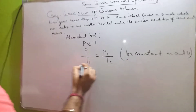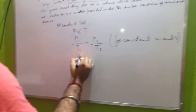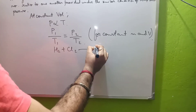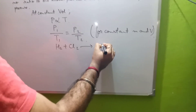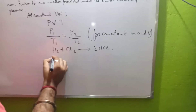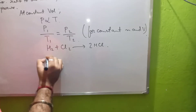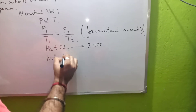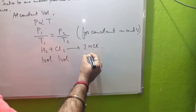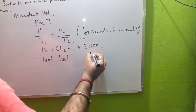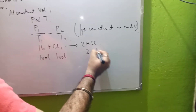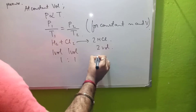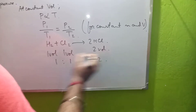Let us take an example: H₂ + Cl₂ → 2HCl. We can see that one volume of H₂ and one volume of Cl₂ gives two volumes of HCl. So the ratio is 1 : 1 : 2.